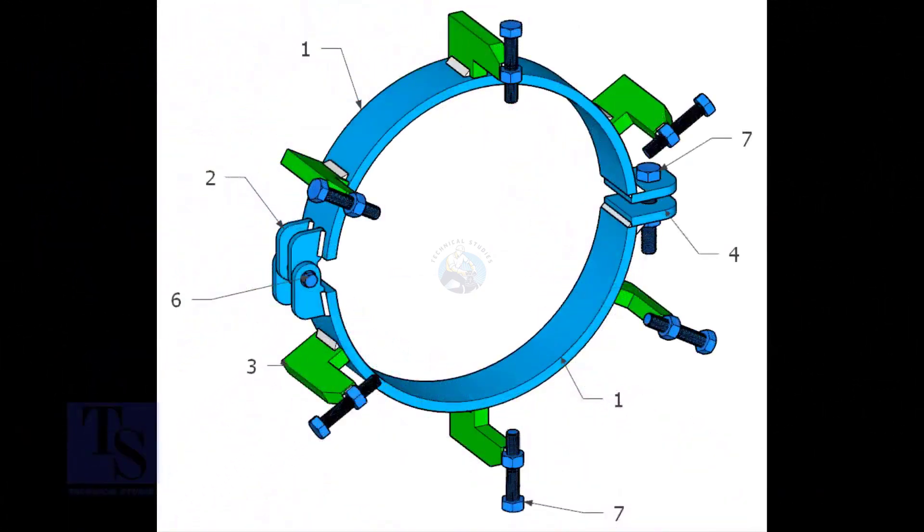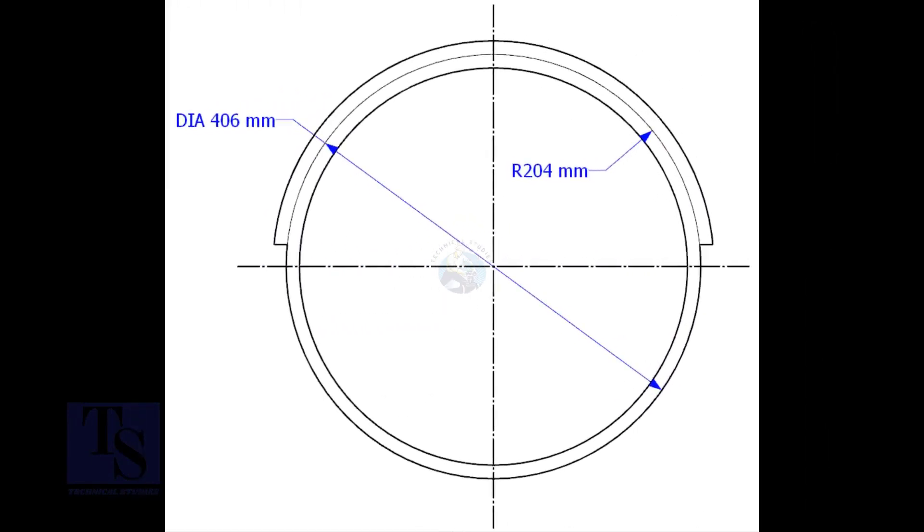For item number one, cut a 70-millimeter width piece from a 16-inch pipe. Cut it exactly into two pieces. 40 schedule is acceptable. Open the pipe segment enough to suit the outer diameter of the pipe.